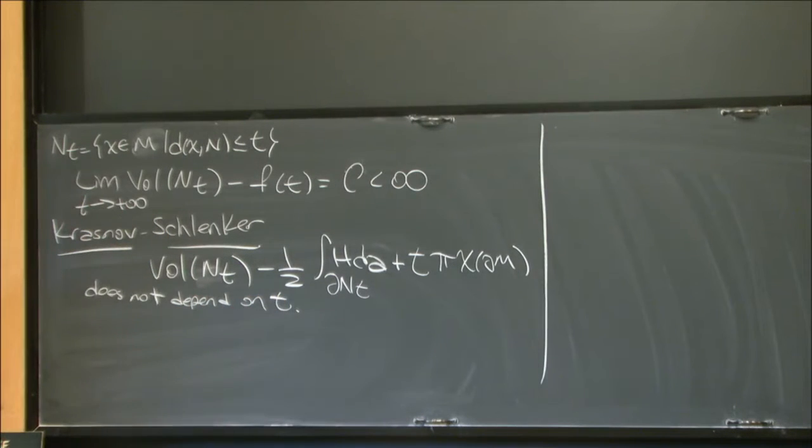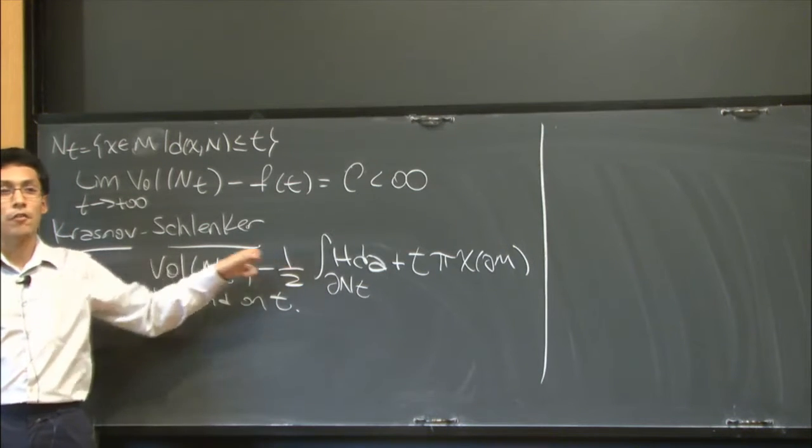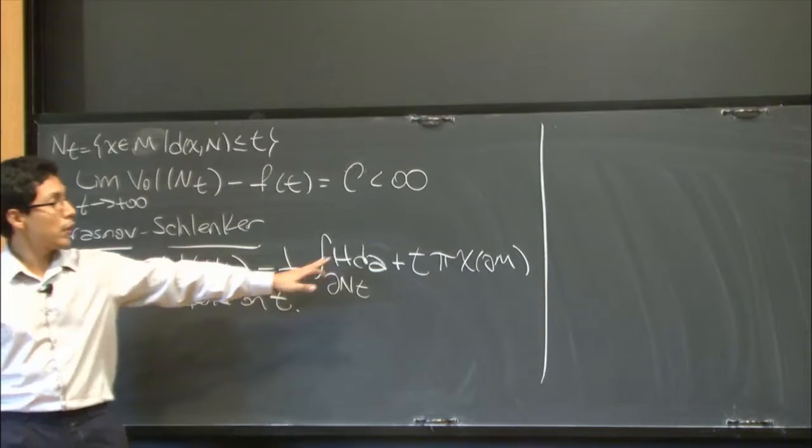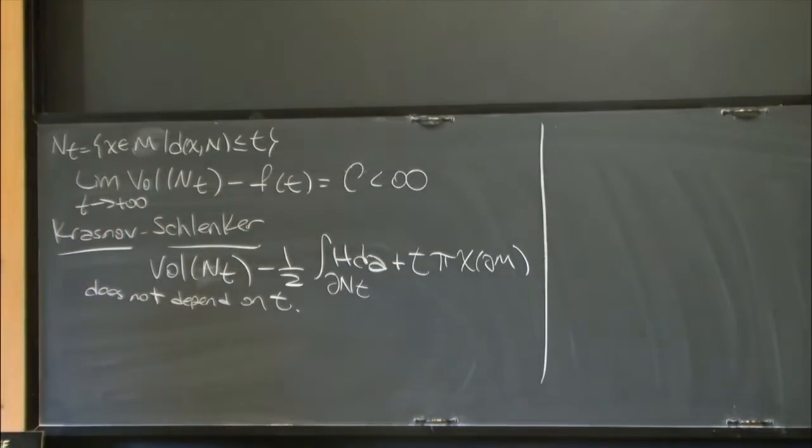And the result is that this quantity does not depend on t. And of course, the proof is that you're going to be differentiating on t and finding that the result is going to be zero. So observe that as you start taking larger and larger t, if you start seeing what's happening with the metric on your boundary, that metric is going to start blowing up exponentially, and so does the volume. Well, the same is going to be true about the mean curvature. So this is taking already care of that exponential behavior. And then you're left just with that linear term that's a little bit more easy to deal with.